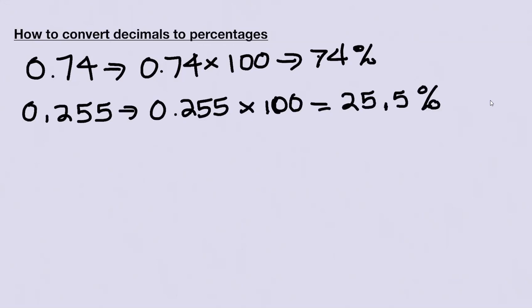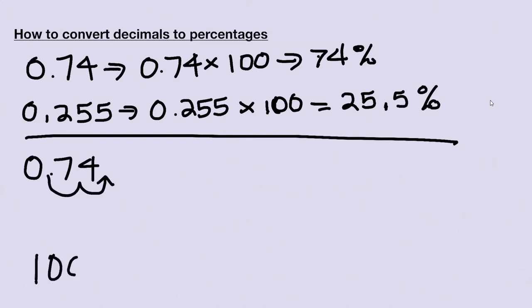Now there are easier ways to do this. If you don't need to do the math, you can simply go ahead and move your decimal place. So 0.74, if I wanted to just move that decimal place two spots, because we're talking about 100 and we're looking at that hundreds place, so you're always moving two spots.